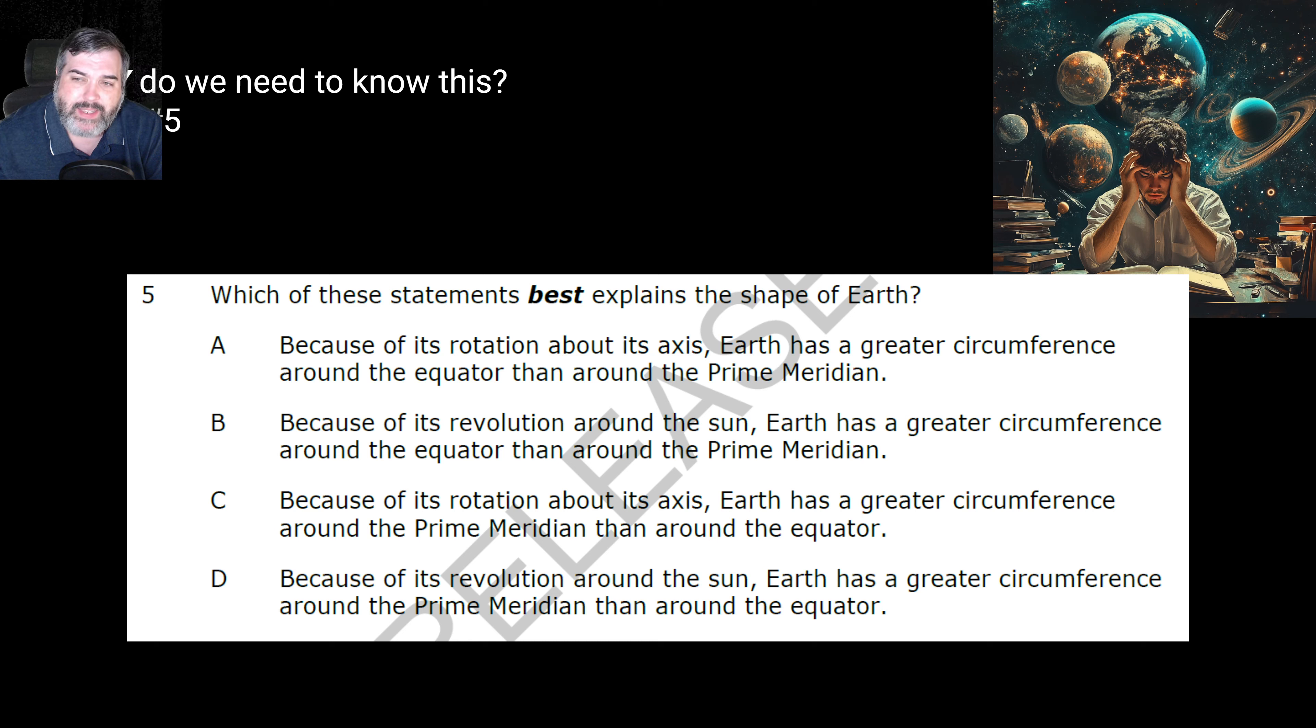2019, number five. Which of these statements best explains the shape of the Earth? A, because of its rotation about its axis, the Earth has a greater circumference around the equator than around the prime meridian. B, because of its revolution around the sun, Earth has a greater circumference around the equator than around the prime meridian. C, because of its rotation about its axis, Earth has a greater circumference around the prime meridian than around the equator. Or D, because of its revolution around the sun, earth has a greater circumference around the prime meridian than around the equator. Now before I give you a countdown here, let me point out there's a lot of words there. You need to break it down and break it down quickly. But I will give you a countdown and then I'm actually going to talk through it before I reveal the answer. 5, 4, 3, 2, 1.